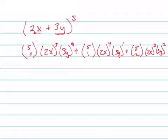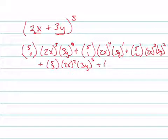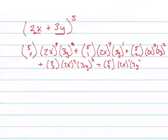Then add 5 choose 3, 2x squared, 3y cubed, plus 5 choose 4, 2x to the first, 3y to the fourth, plus 5 choose 5, which is 2x to the zero times 3y to the fifth. 2x to the zero means 1.